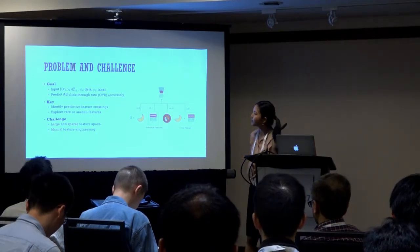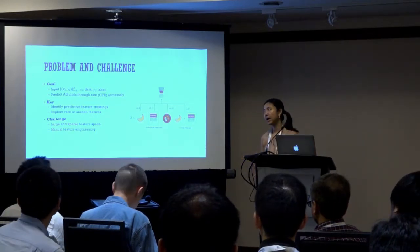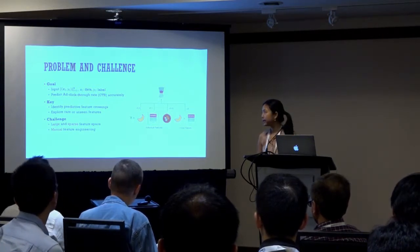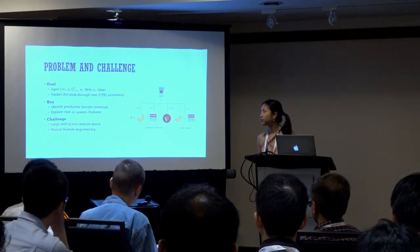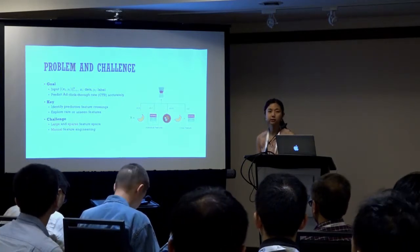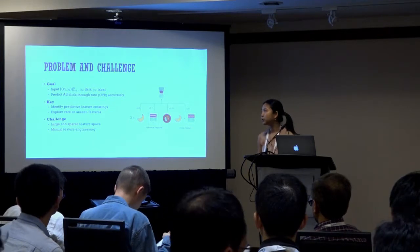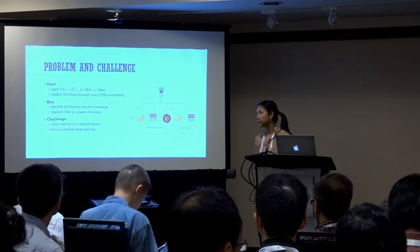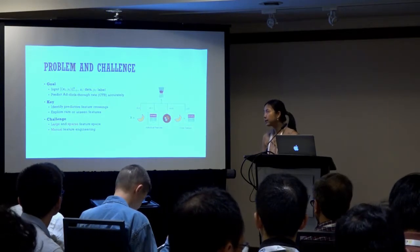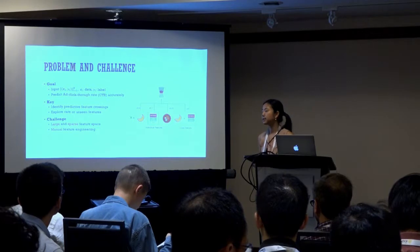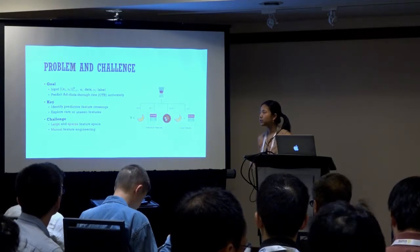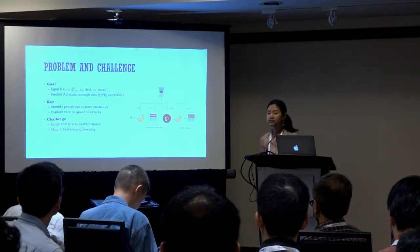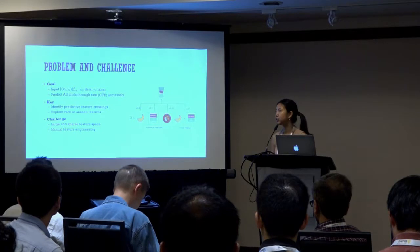Assume you are given data pairs X and Y, where X is your data — for example, user logs — it could be sparse or dense. And Y is your label; for example, one if the user has clicked an ad and zero otherwise. Your goal is to predict the click-through rate accurately. This is essentially a generic classification problem, and the key behind the success of such a classification algorithm is to identify those predictive feature crossings and at the same time explore those rare or unseen feature pairs.